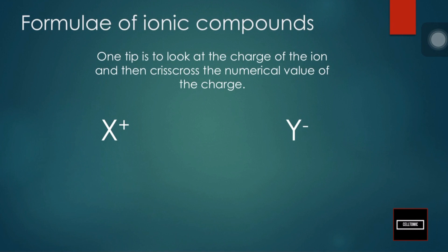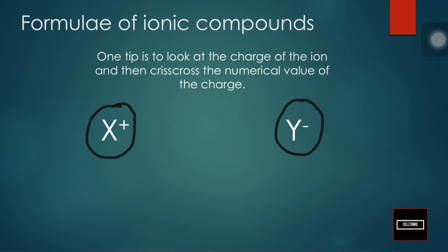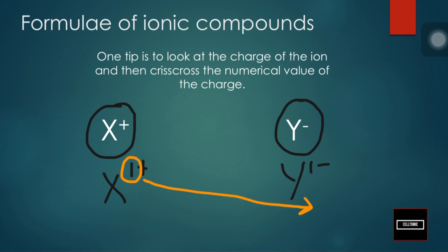Let's learn to write the formula of ionic compounds. One tip is to look at the charge of the ion and then crisscross the numerical value of the charge. So if we have X+ and Y−, and there is no number in front of the sign, we treat it as 1+ and 1−. We take the value 1 from X and cross it to the Y side, and take the 1 from Y and cross it to the X side.